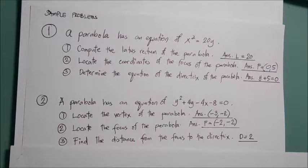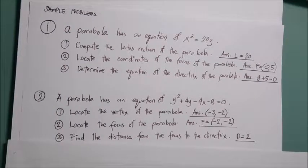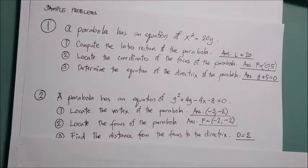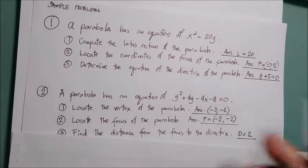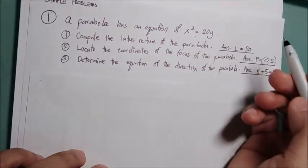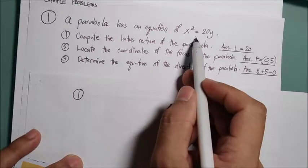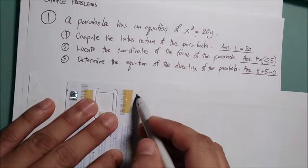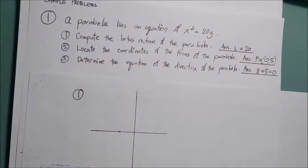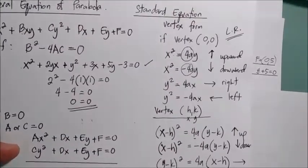From the book of Sabelia, let's try to solve number one. A parabola has an equation of x² = 20y. Compute the latus rectum of the parabola — the answer is 20. Locate the coordinate of the focus — coordinates (0, 5). Determine the equation of the directrix. Checking the equation, the vertex of the parabola is at (0, 0) and it opens upward. The standard form is x² = 4ay, and x² = 20y, so this opens upward.